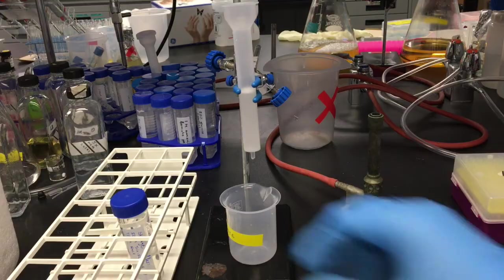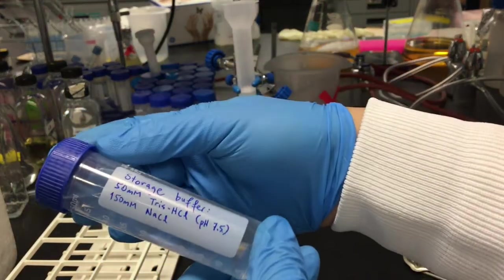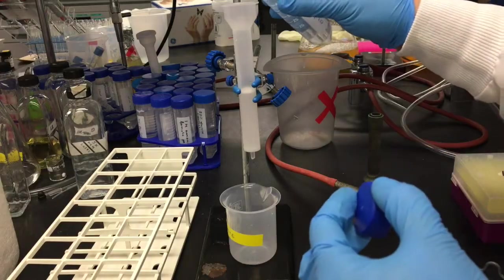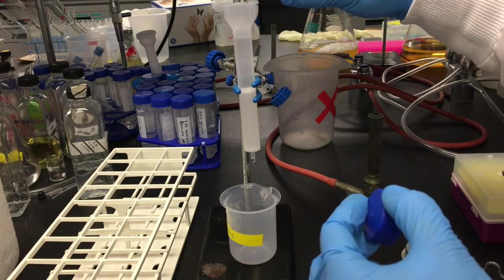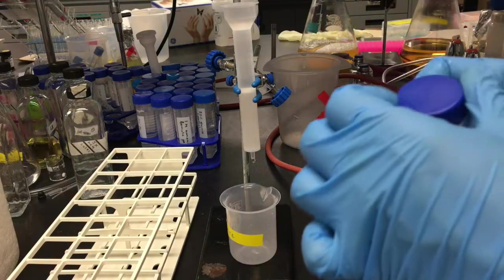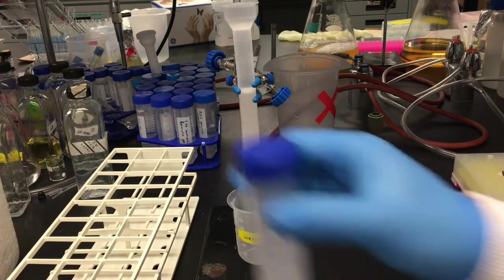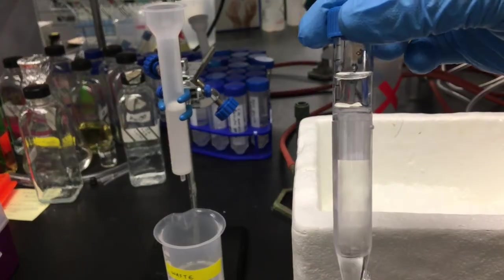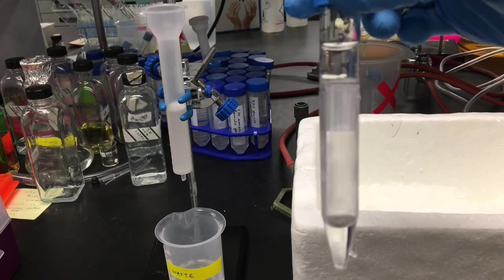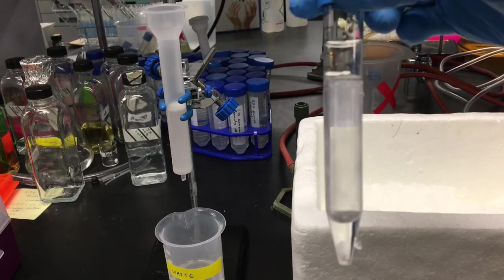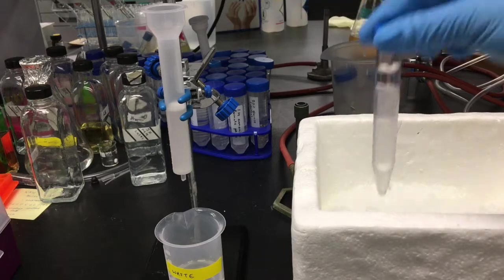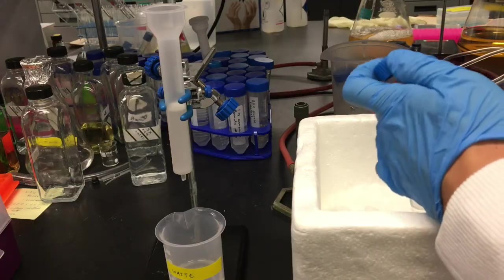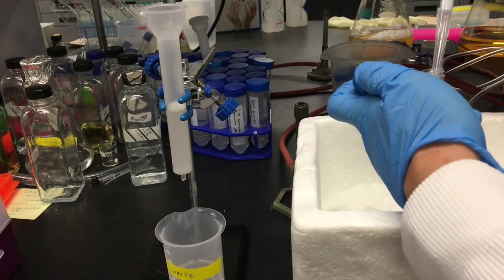First, I need to equilibrate the column with the buffer in which I will store my protein. Here you can see the centrifugal filter after it spun. My protein sample remains on top in a reduced volume of buffer, and on the bottom is buffer that passed through the filter. Then, with 3 milliliters or less of concentrated protein sample, I can load this onto the size exclusion column equilibrated with storage buffer.